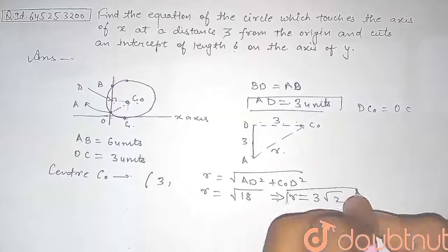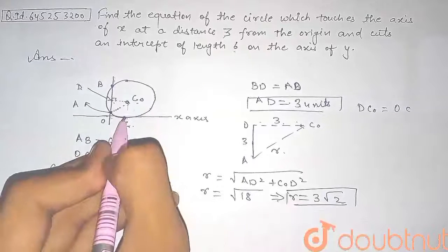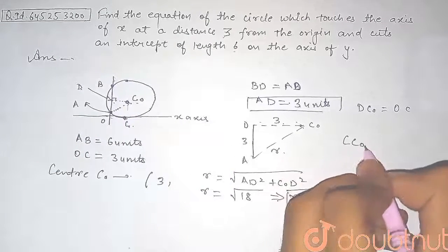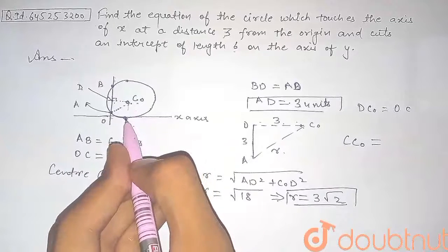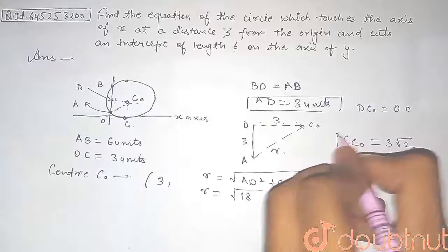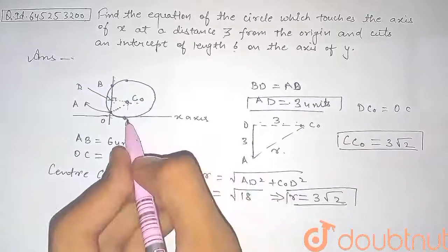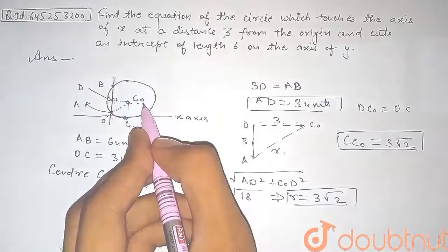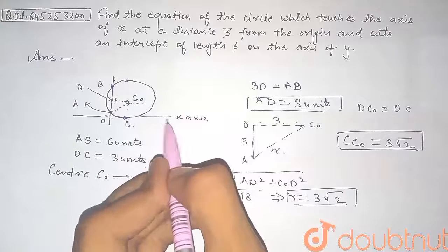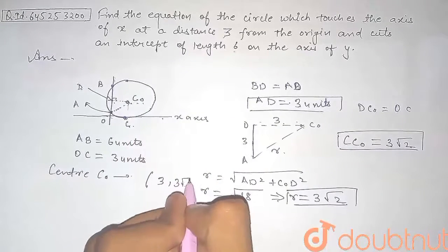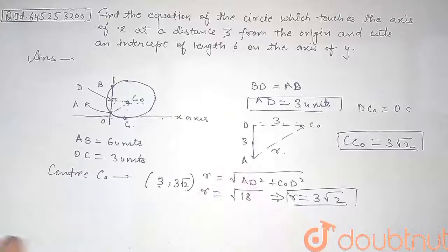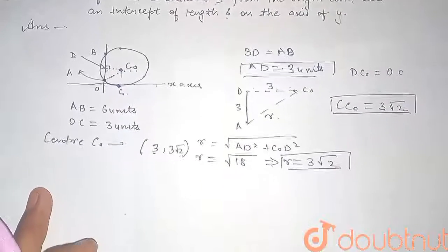The distance CC₀ equals the radius of the circle, since C is the point of tangency, so CC₀ = 3√2. From this we can confirm that the y-coordinate of the center C₀ is 3√2, since it is measured with respect to the x-axis. Therefore, our center is (3, 3√2) and the radius is 3√2.